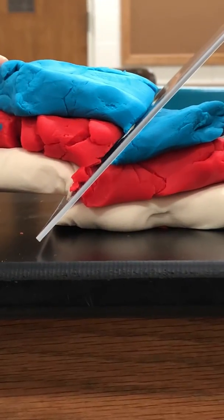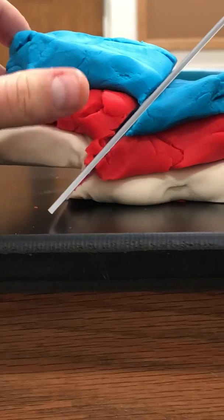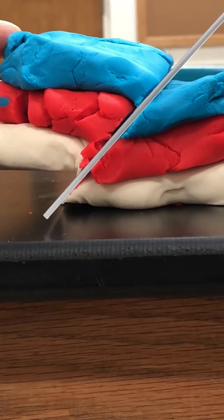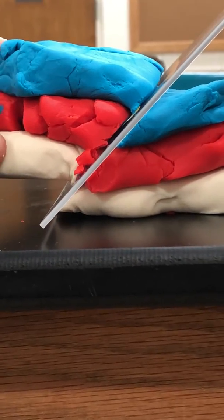So I'm gonna take this hanging wall, I'm gonna move it up relative to the foot wall, and so if you were driving by and you saw this in a road cut, what you'd notice is that this red layer is offset. You might also notice that the white and blue layers are offset.